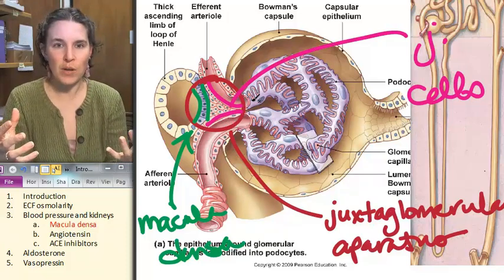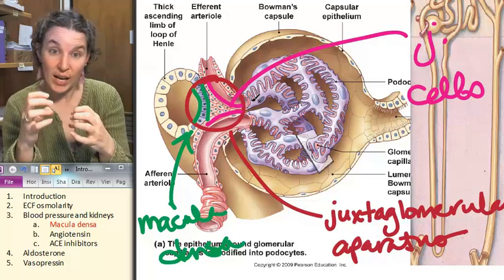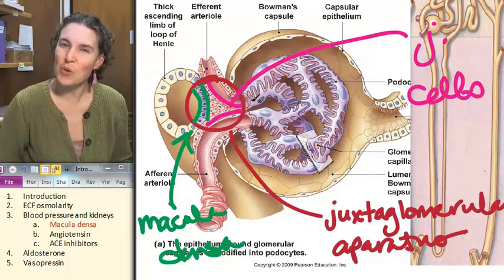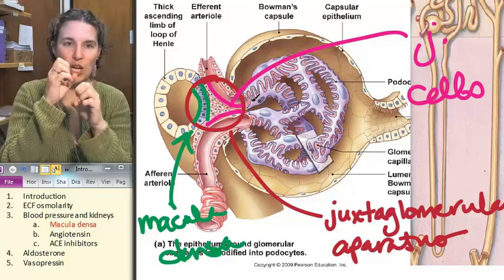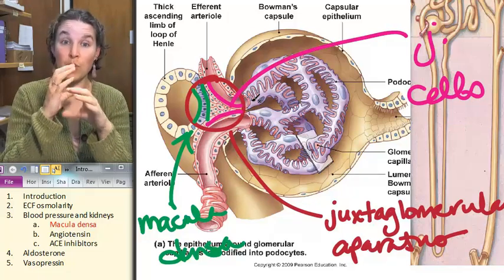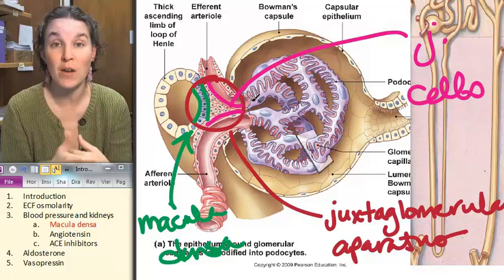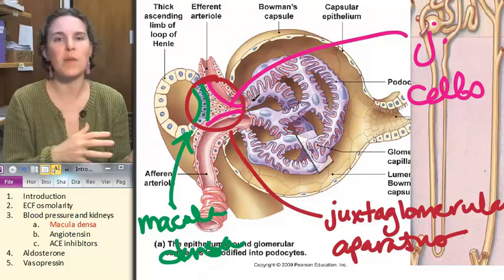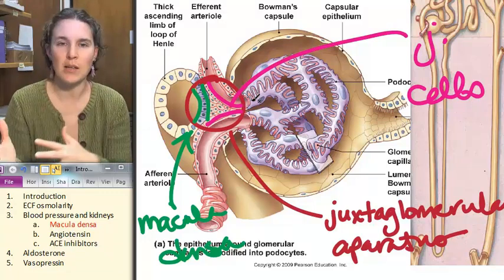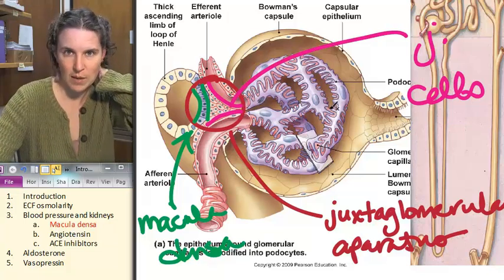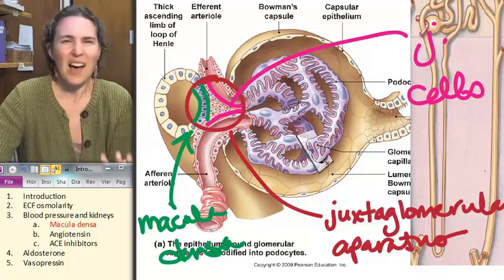They send the message to the juxtaglomerular cells, which, check out where they're located. They're right on the afferent and efferent arterioles. So can you imagine that by changing the diameter of those vessels, we could actually control the amount of filtrate that's coming into the kidney or the amount of blood that's coming into the kidney to be turned into filtrate during filtration in Bowman's capsule?